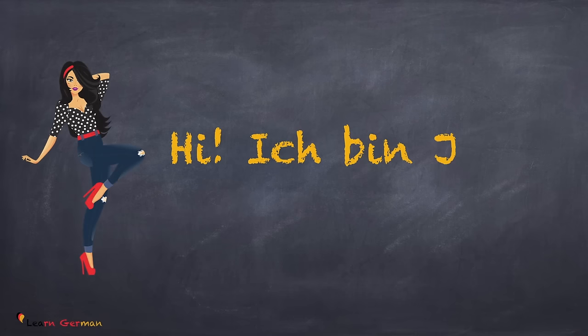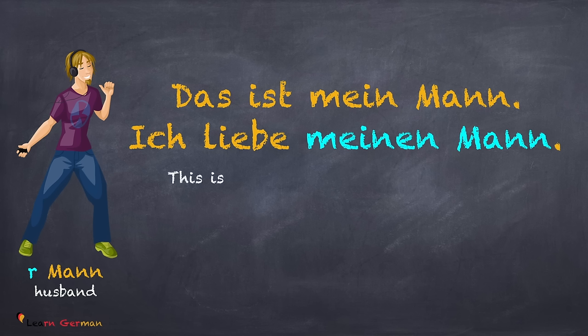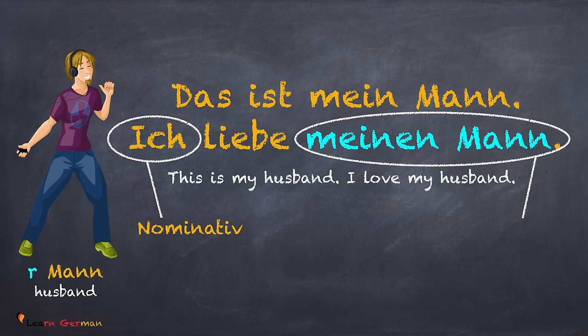Let's do a few sentences to understand them. Hi, ich bin Julia. Das ist mein Mann. Ich liebe meinen Mann. In this sentence, 'ich' is the Nominativ subject, whereas 'mein Mann' is the accusative object. As we have learned, when the accusative object is masculine, the article changes from ein to einen — in this case from mein to meinen.